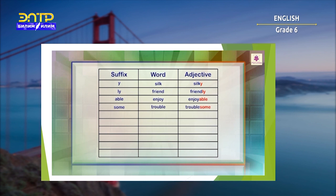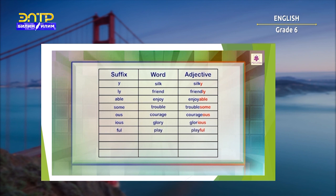Next are adjectives ending in -OUS, -IOUS, or -FUL. For example: courage → courageous, glory → glorious, play → playful. Some adjectives also end in -ISH or -AL. For example: child → childish, nature → natural.